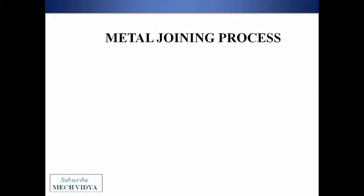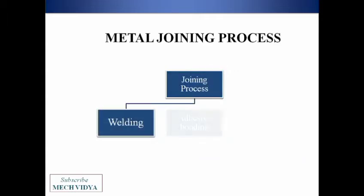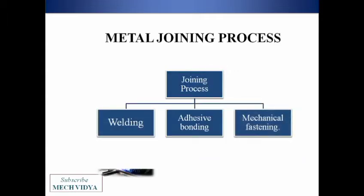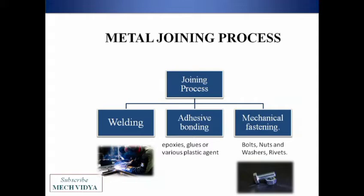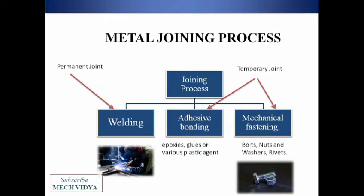Before going to welding, let us see the family of joining processes. Apart from welding, we can also join metals using adhesive bonding and various mechanical fastening techniques. Examples of adhesive joining are glues, epoxies, etc., while mechanical fastening is done with screws, bolts, nuts, and rivets. The major difference is that welding is a permanent joint while these two are temporary joints.